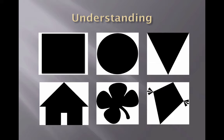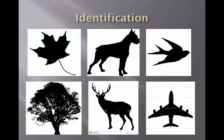Basic primitive shapes: the top row we see all the time — a square, a circle or spherical shape, and a triangle. You can see what happens if you take those shapes and start to manipulate them: you end up with a house, a clover, and a kite, just by duplicating. That's the process kids go through. Then in the identification stage, we take those shapes another step further — we know what a maple leaf looks like.